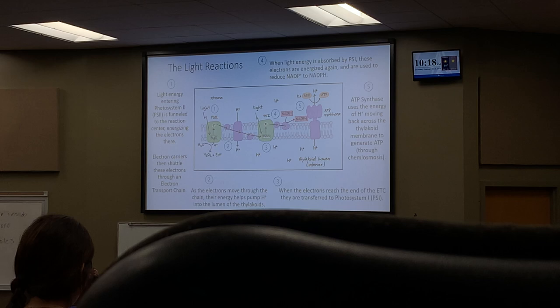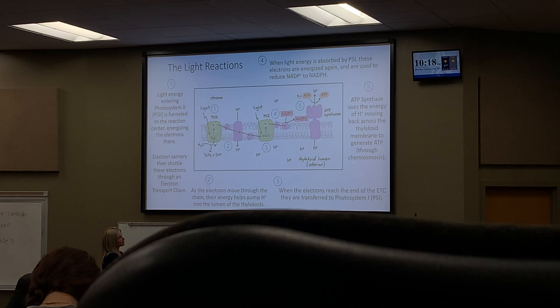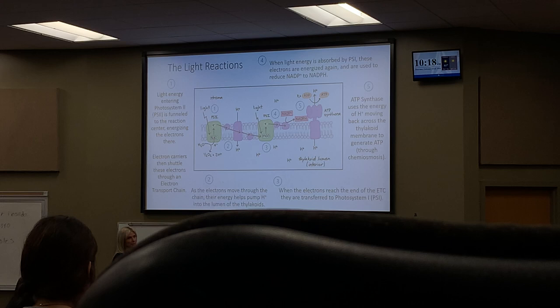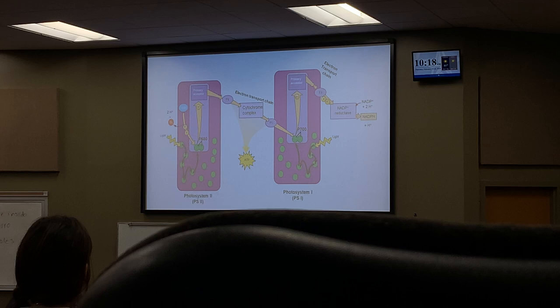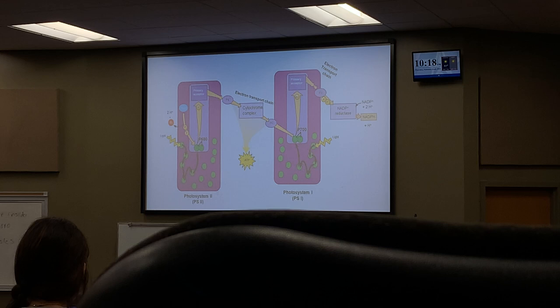ATP synthase uses the energy of protons moving back across the thylakoid membrane to generate ATP through chemiosmosis. Put a note: protons are generated in the first electron transport chain. This diagram shows the same thing — two photosystems with two electron transport chains.